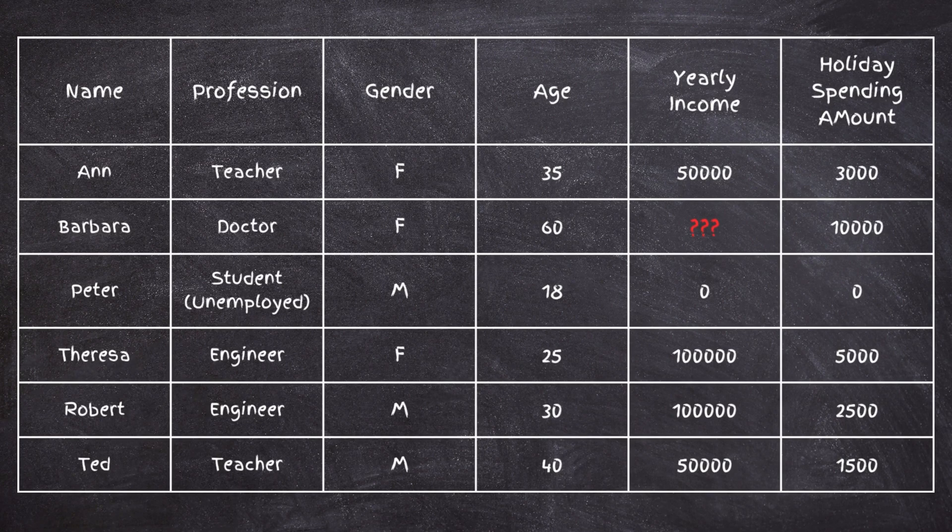The third type is Missing Not at Random, or MNAR. This occurs when the reason data is missing has to do with the column itself. For example, if Barb the doctor didn't report her income because it's high, the income is missing because of the income value itself. This is the key difference from MAR: for MNAR, the missing column is its own reason for being missing, whereas for MAR, other columns explain the missingness.